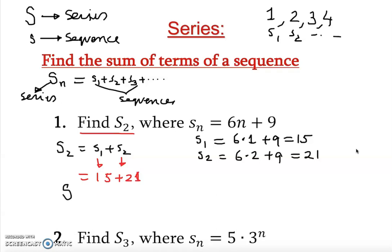So S₂ (the series) is equal to 36. That is the answer for this specific question. That's how we find the series — we find each sequence term, then we sum the ones requested to find the series.